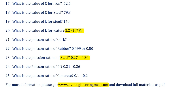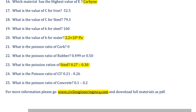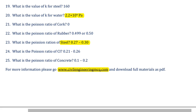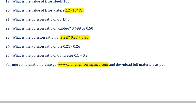Twentieth question: what is the bulk modulus for water? Bulk modulus for water equals 2.2 × 10⁹ Pa, or 2.2 GPa, or 2.2 kN/mm². Twenty-first: what is the Poisson ratio of cork? That is zero — cork is an impermeable buoyant material. What is the Poisson ratio for rubber? It is 0.499 to 0.5. And what is the Poisson ratio of steel? It is 0.27 to 0.3 — an important question.